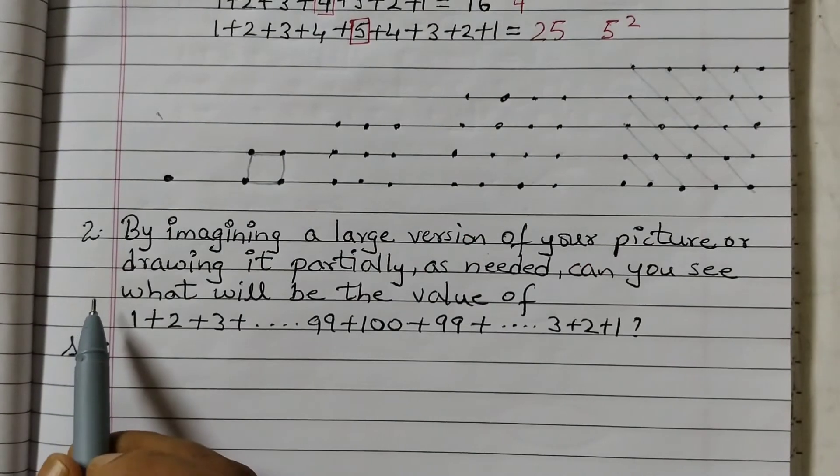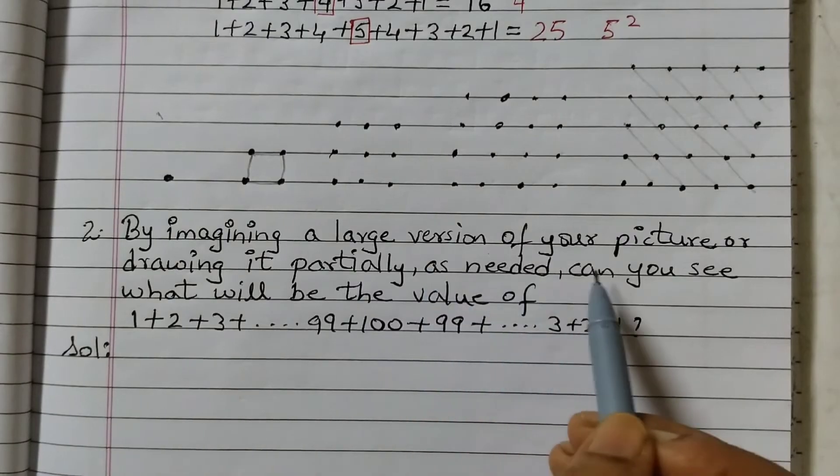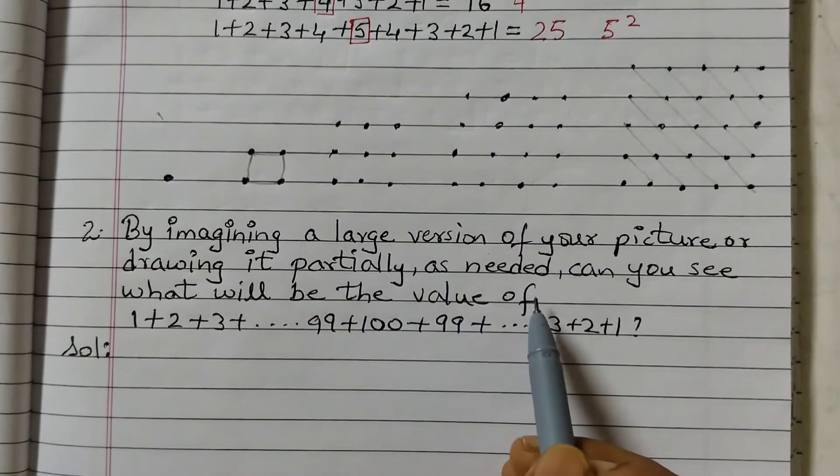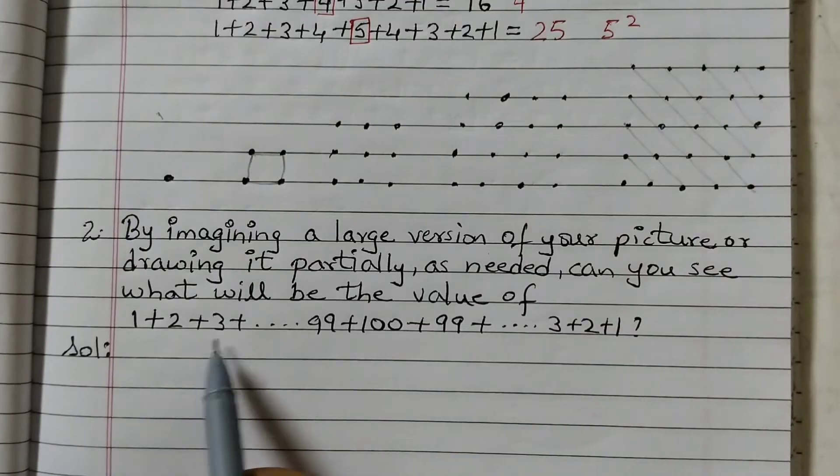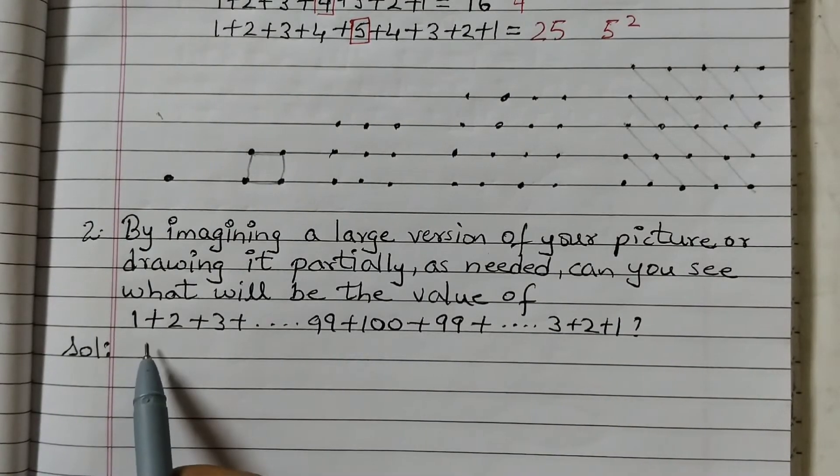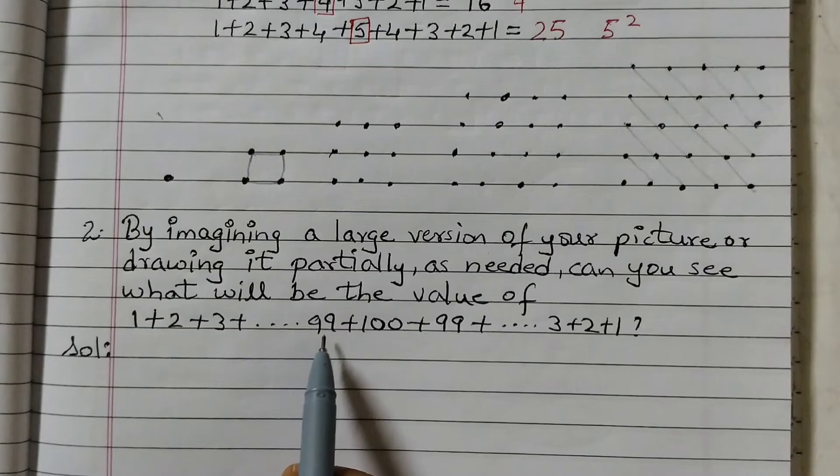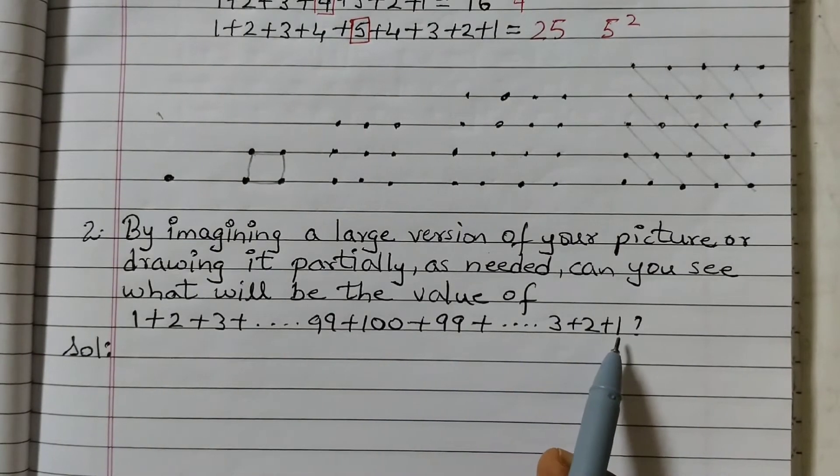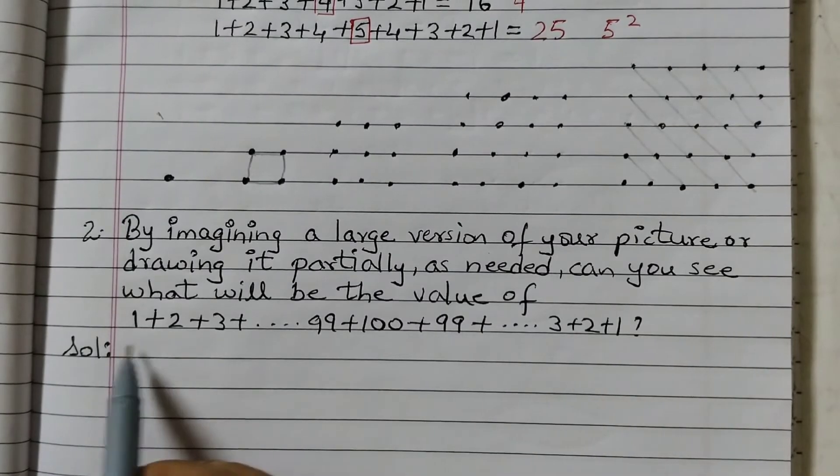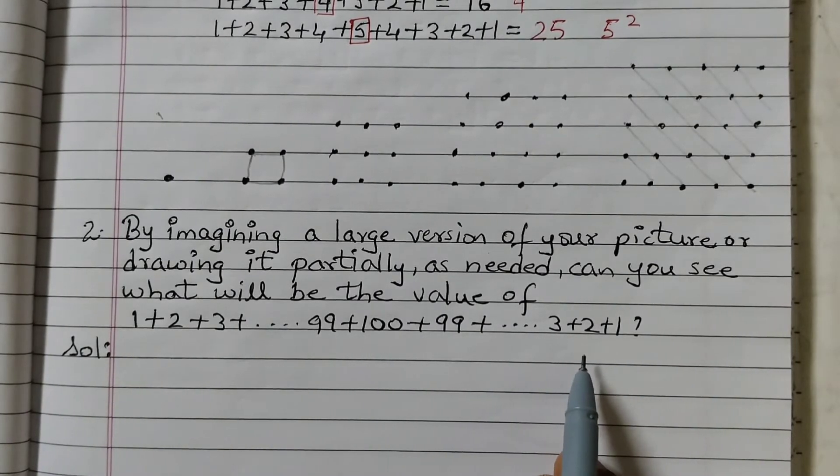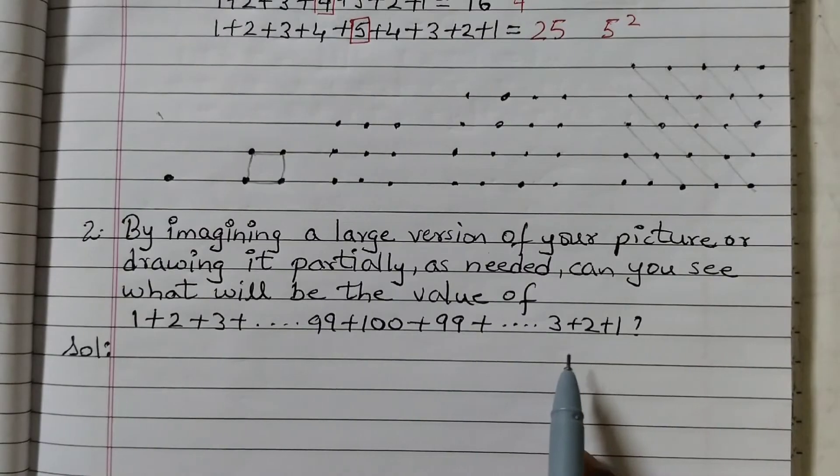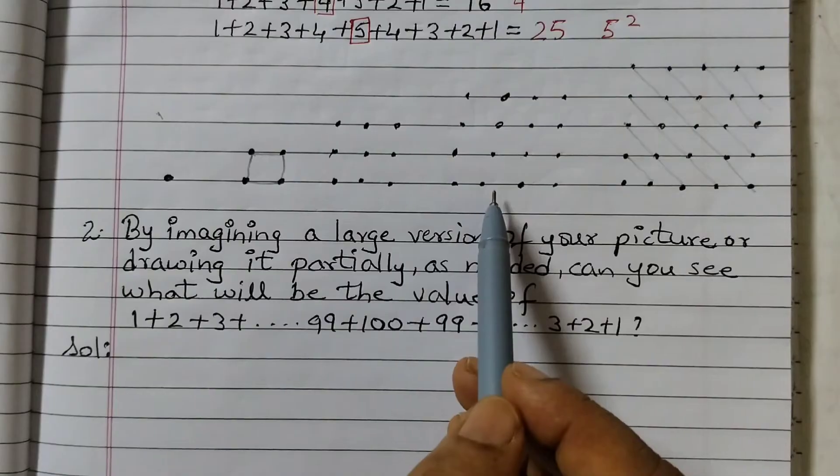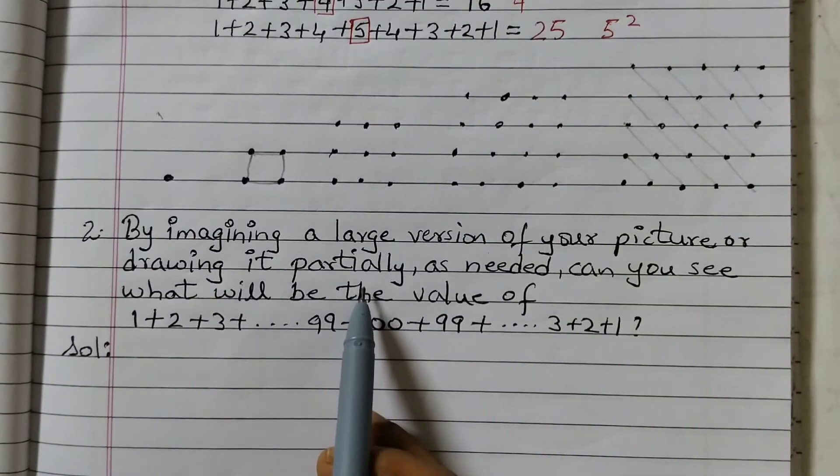The second question is, by imagining a large version of your picture or drawing it partially as needed, can you see what will be the value of 1 plus 2 plus 3 plus going up till 99, 100 and from 100 again going down till 1. So we need to find the value of this. When we add all these numbers, what do we get? And for this, either you can imagine this pictorial representation or you can draw it partially.